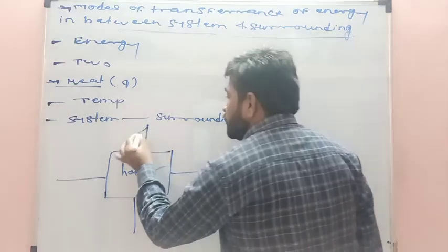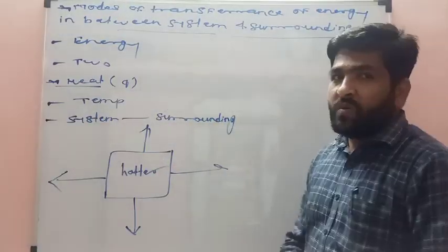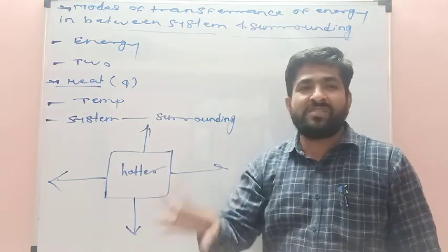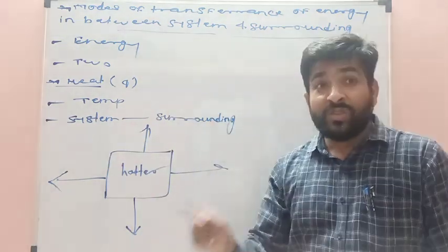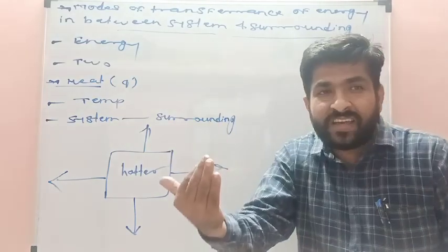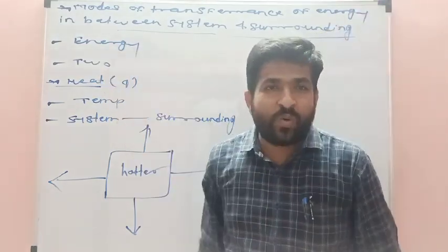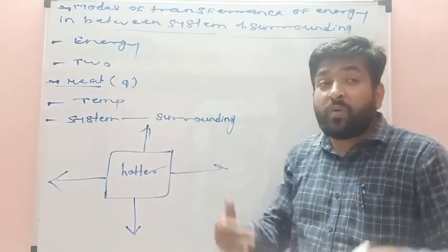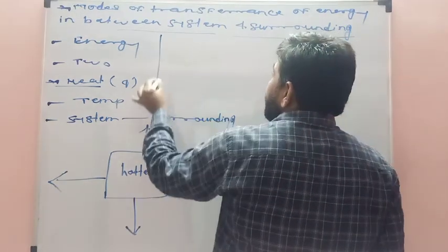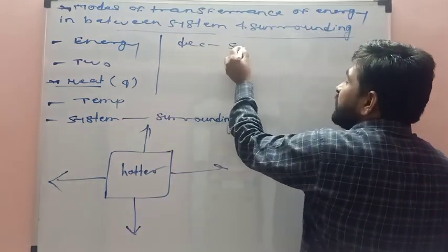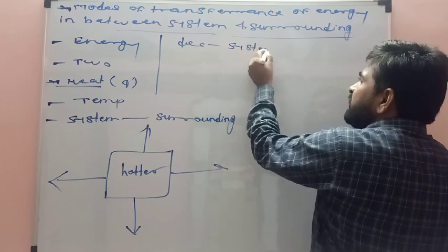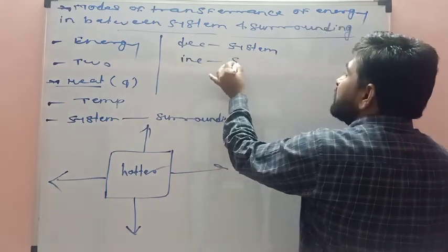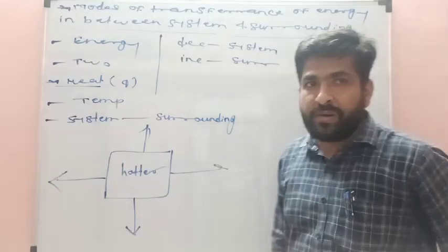Heat is lost from the system to the surrounding. Because the system is at higher temperature than the surrounding, the system loses heat and the surrounding gains heat. This causes the temperature of the system to decrease and the temperature of the surrounding to increase.